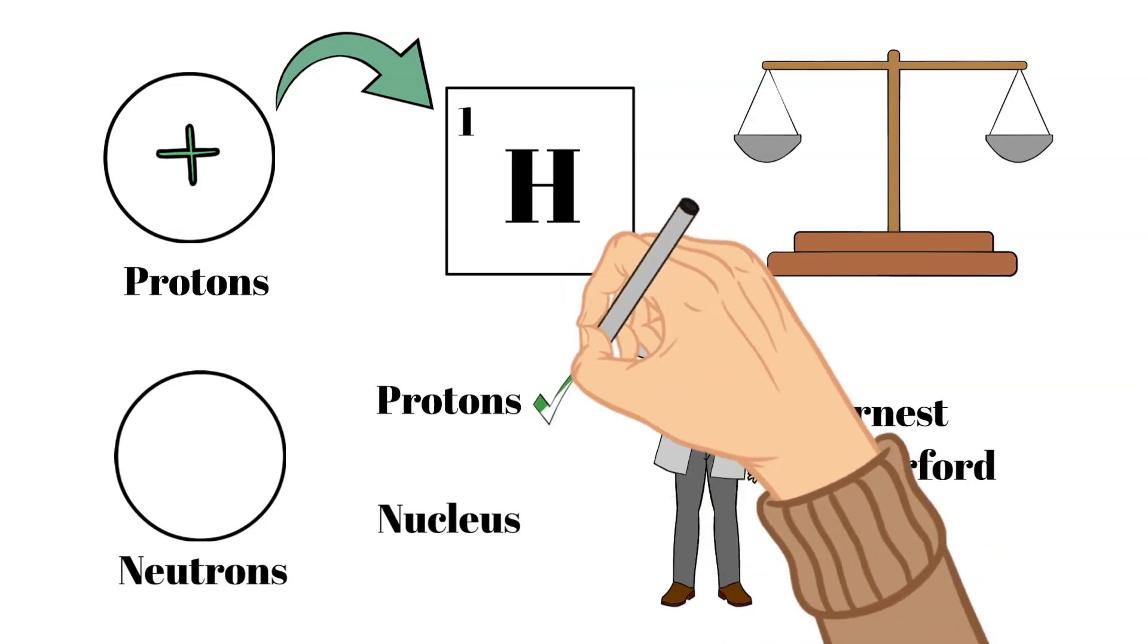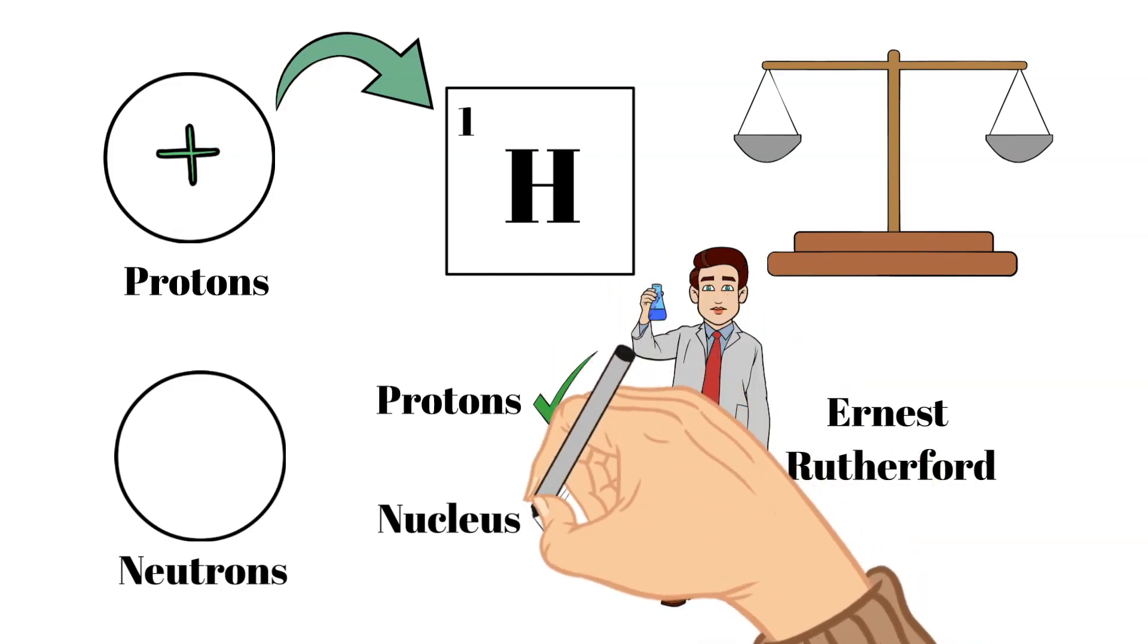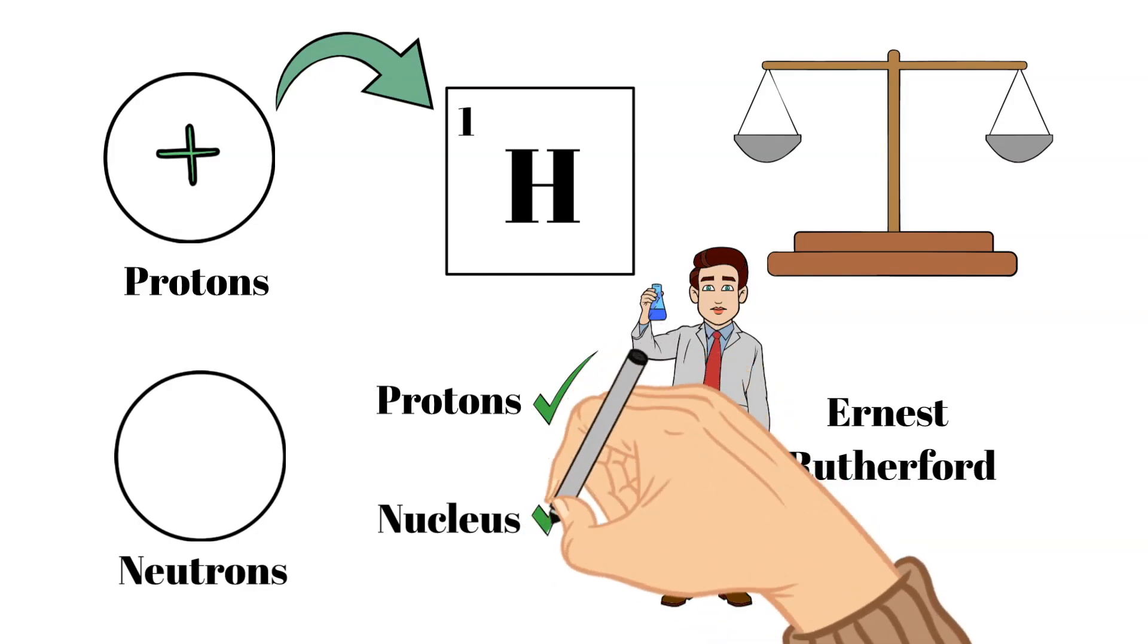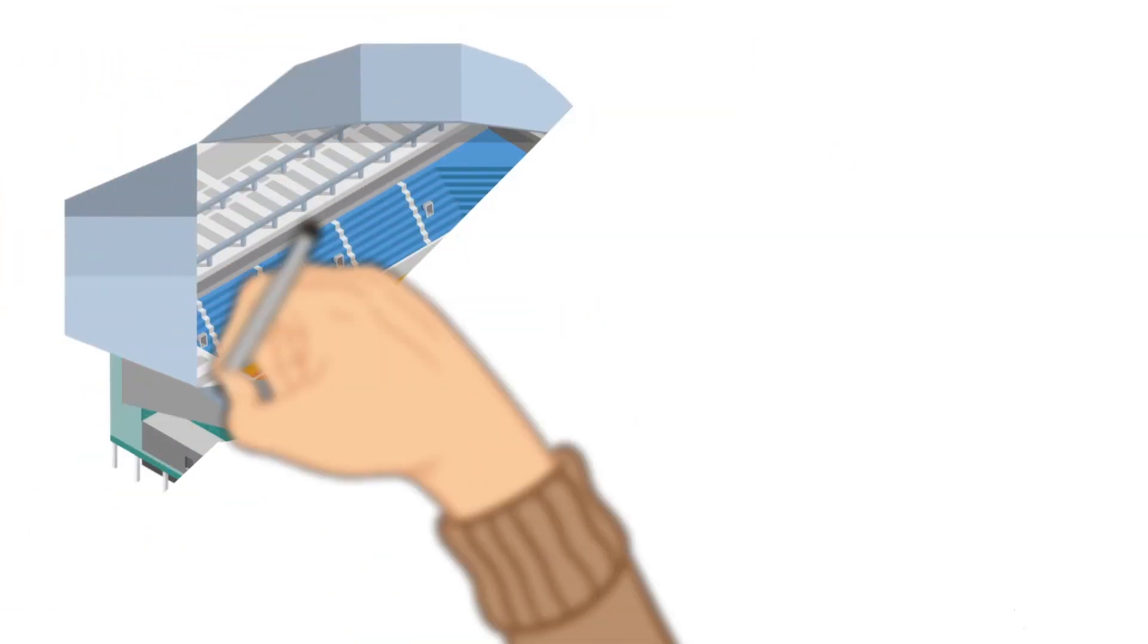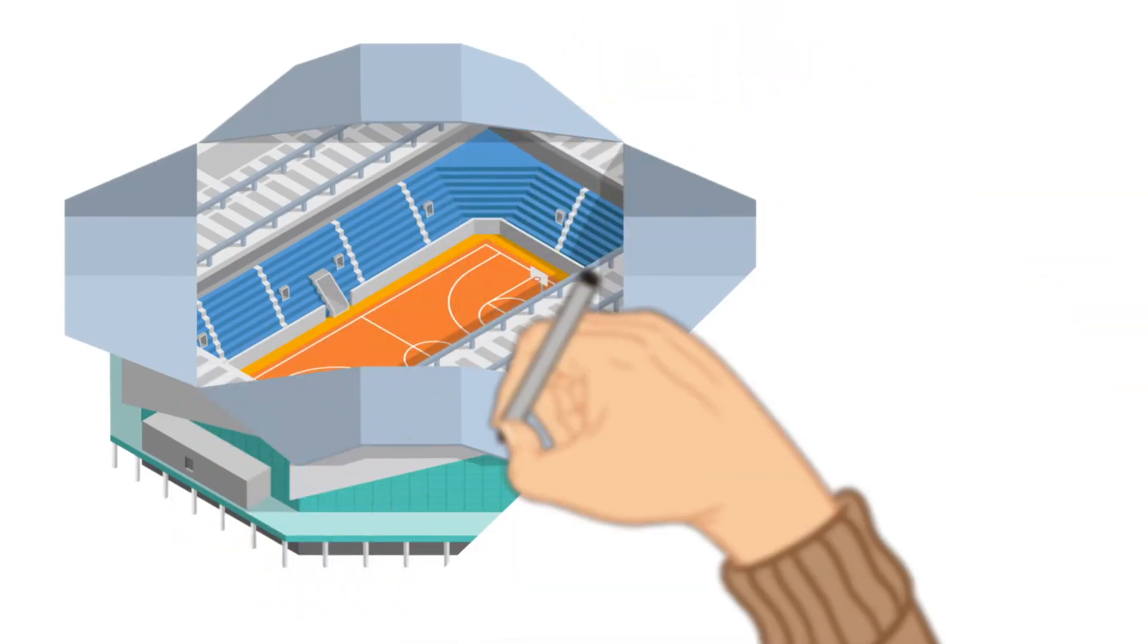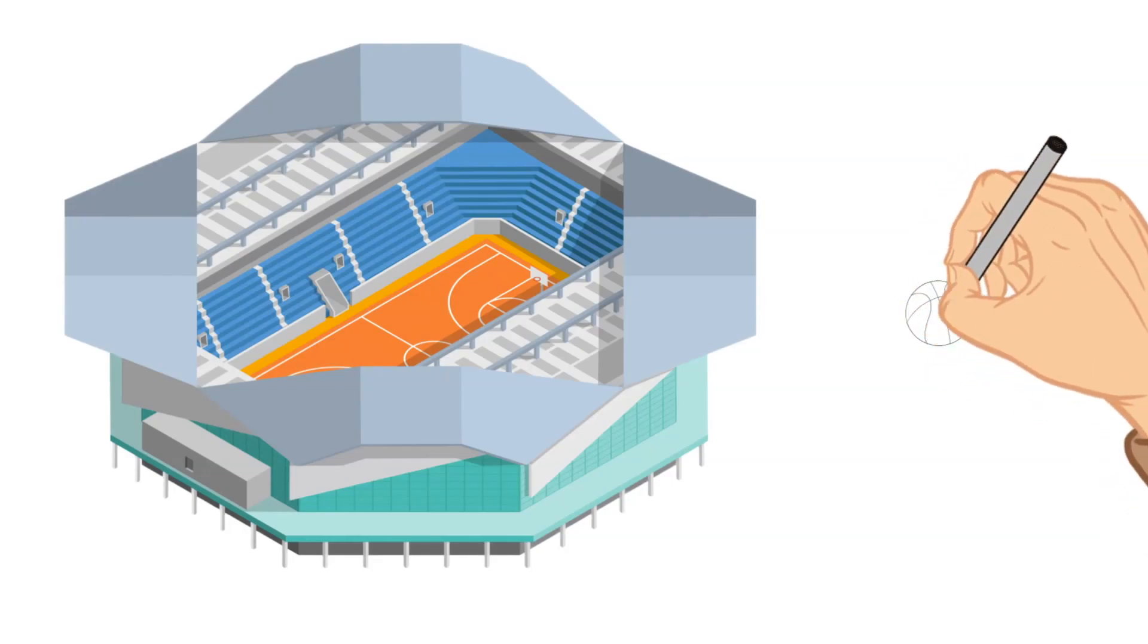Because atoms are so tiny and protons only make up just a small part of an atom, protons are even smaller than that. In fact, if an atom was scaled up to be the size of a basketball stadium, a proton would only be the size of a small marble.